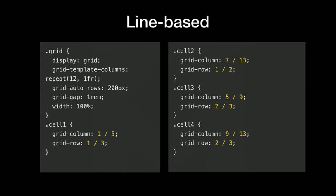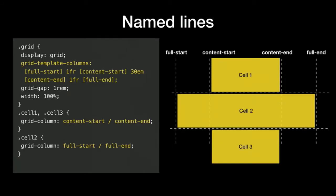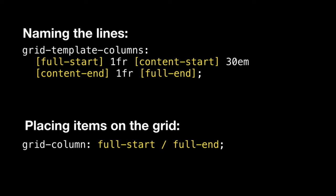Line numbers are the most basic way of laying items on a grid but they can be cumbersome and hard to maintain if you make changes to your grid. Named lines are more handy. You add names for the lines in between your track definitions using angle brackets, and they can be anything you want — you can even have multiple names per line. You can think of them like CSS classes but defined in CSS itself. Placing items works exactly the same as with line numbers but you use the names instead, and it's more flexible because adding a line doesn't require renumbering.